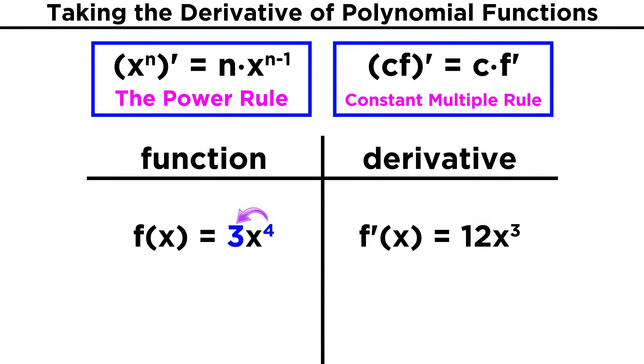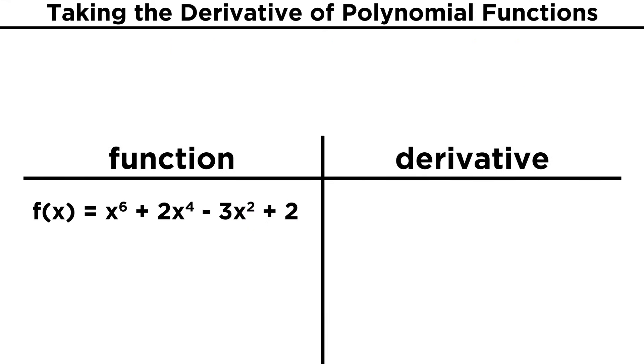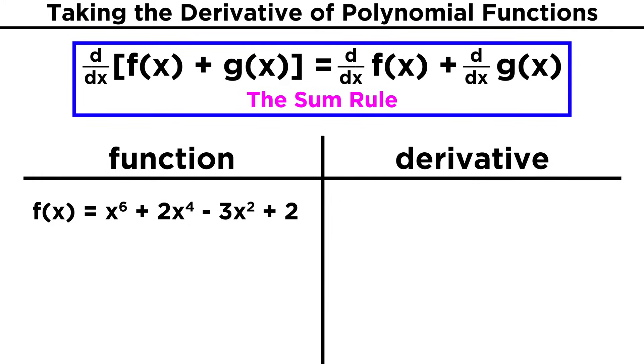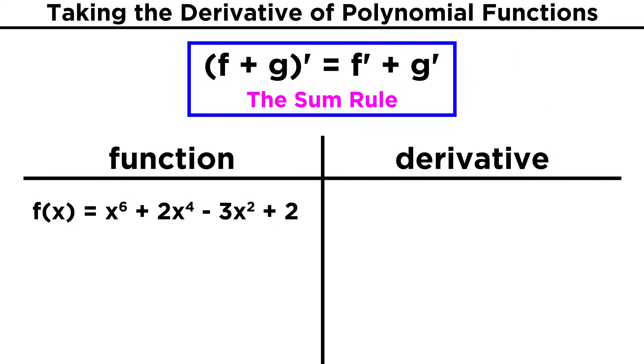So however we think about it, when taking a derivative, the exponent that we pull down must multiply any existing coefficient. Now what about polynomials with multiple terms? Actually, this will be no problem, due to the sum rule. This says that the derivative of the quantity f of x plus g of x will be equal to the derivative of f of x plus the derivative of g of x, or more simply, f plus g quantity prime equals f prime plus g prime.